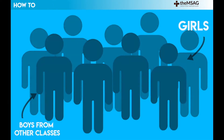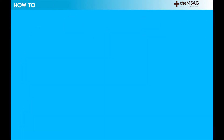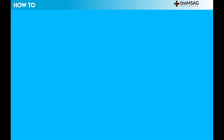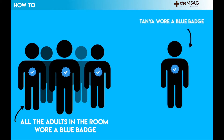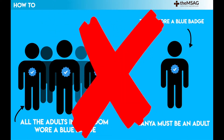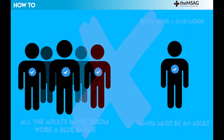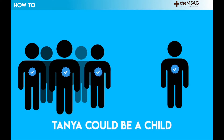This error can be demonstrated in other ways. Imagine you were told that all the adults in a room wore a blue badge and then were told that Tanya wore a blue badge. It would be tempting to conclude that Tanya must be an adult. This would be making the same error. Even though we're told that every adult wore a blue badge, we are not told that only adults wore blue badges.